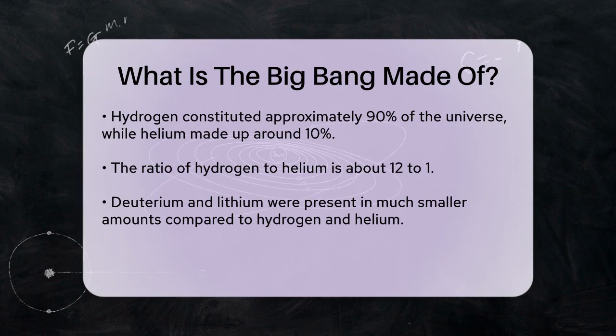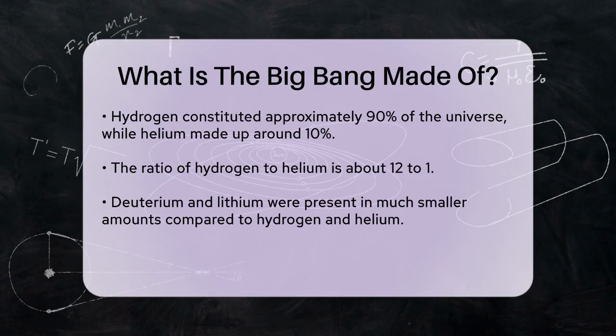Deuterium, which is a heavy form of hydrogen, and lithium-7, a light isotope of lithium, were also formed but in much smaller quantities.